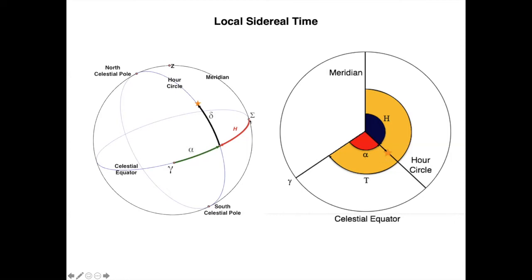That means that the local sidereal time is the hour angle of the vernal point. The right ascension alpha is fixed, but the hour angle h increases. So does the value of the local sidereal time t.